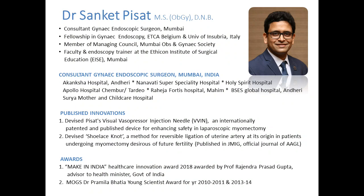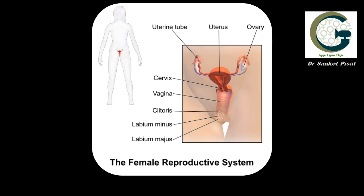The initial two and a half minutes of this video contains information about the normal anatomy and functioning of the female reproductive tract, which has the uterus — a muscular organ in the center where the baby actually grows — and a pair of tubes and ovaries on each side of the uterus. So there are two fallopian tubes and two ovaries and one uterus forming the female genital tract, along with the cervix and the vagina.